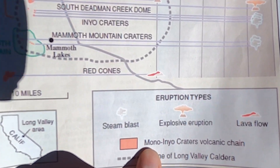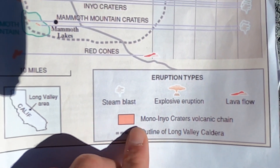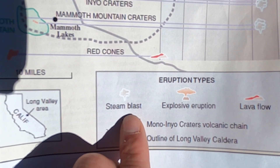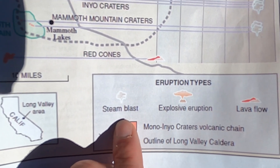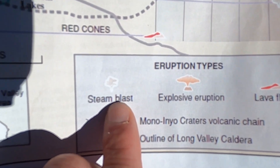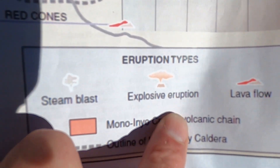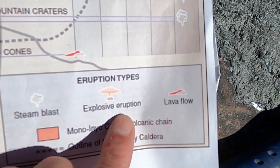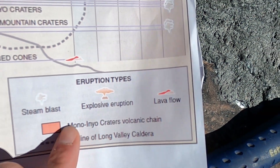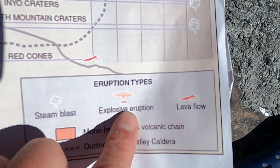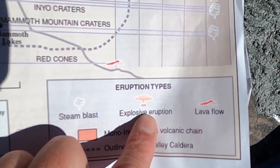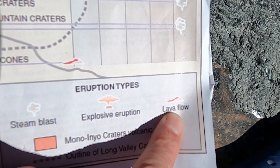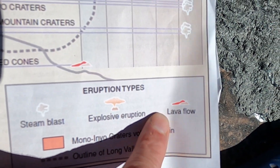Most of these volcanoes — and this map is from the USGS — show symbols for steam blasts, explosive eruptions, and lava flows. For the most part, the explosive eruptions are rhyolitic in composition, and some are basaltic.